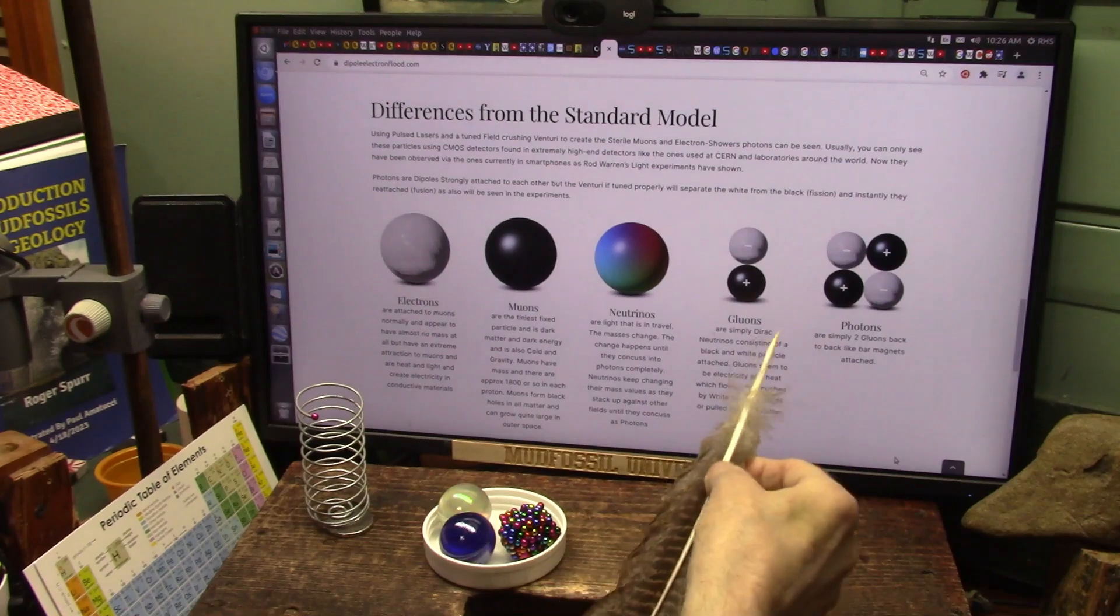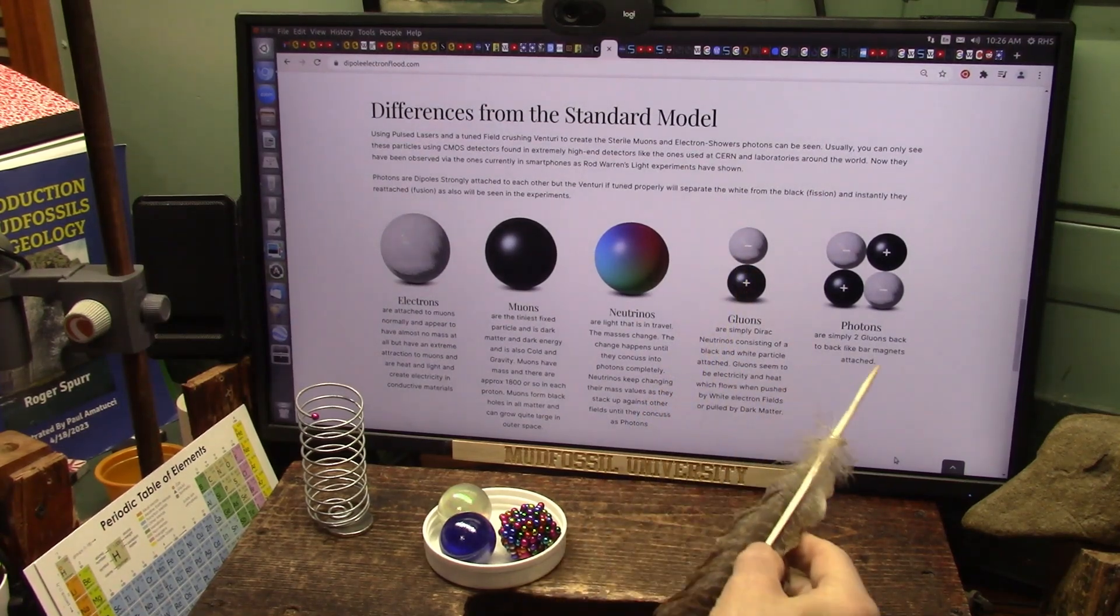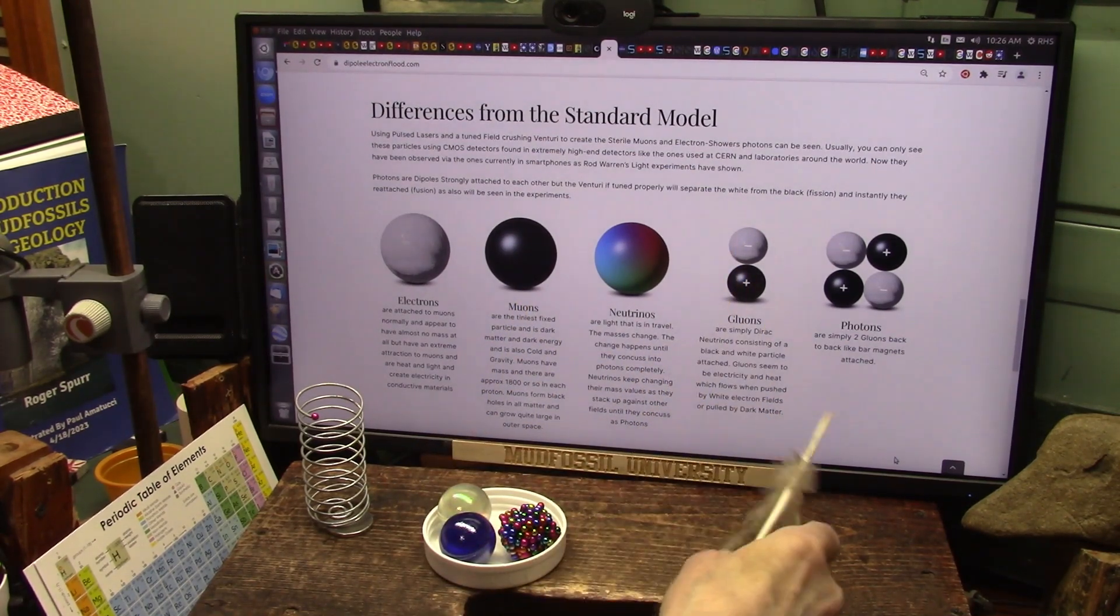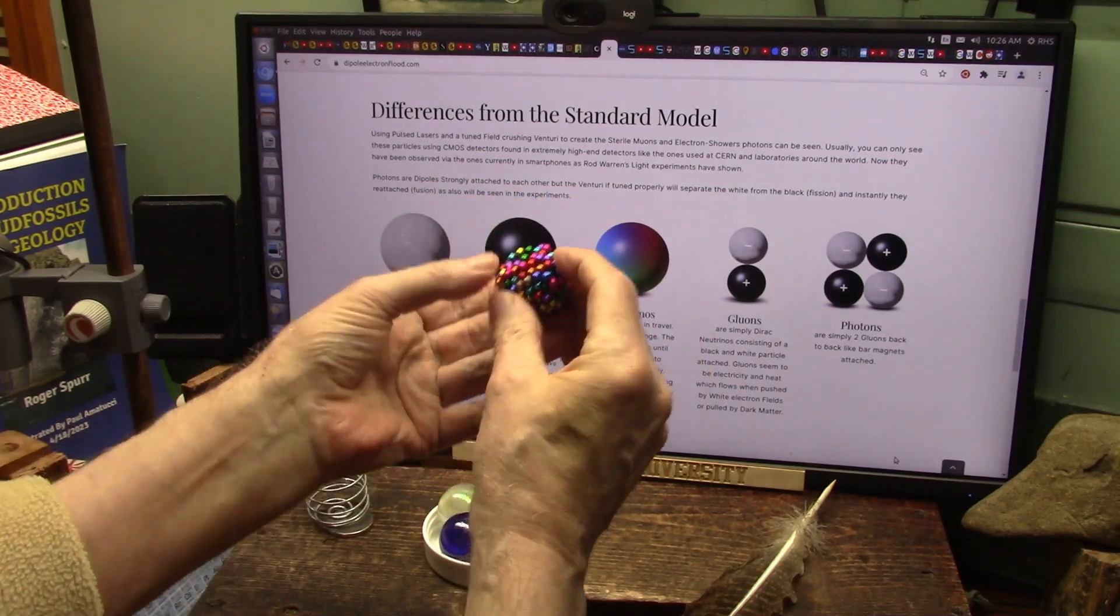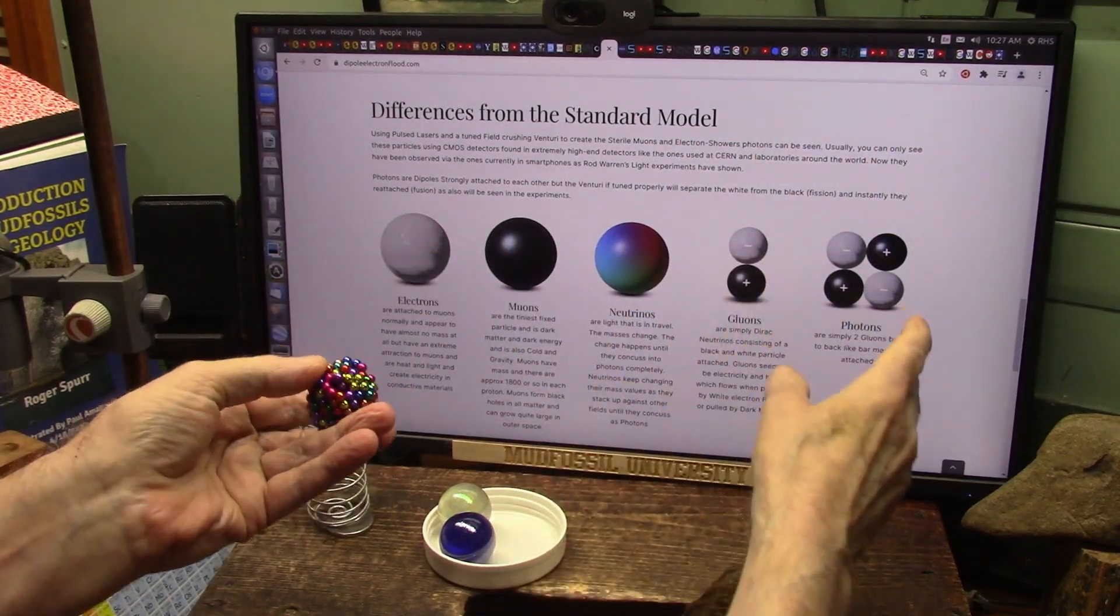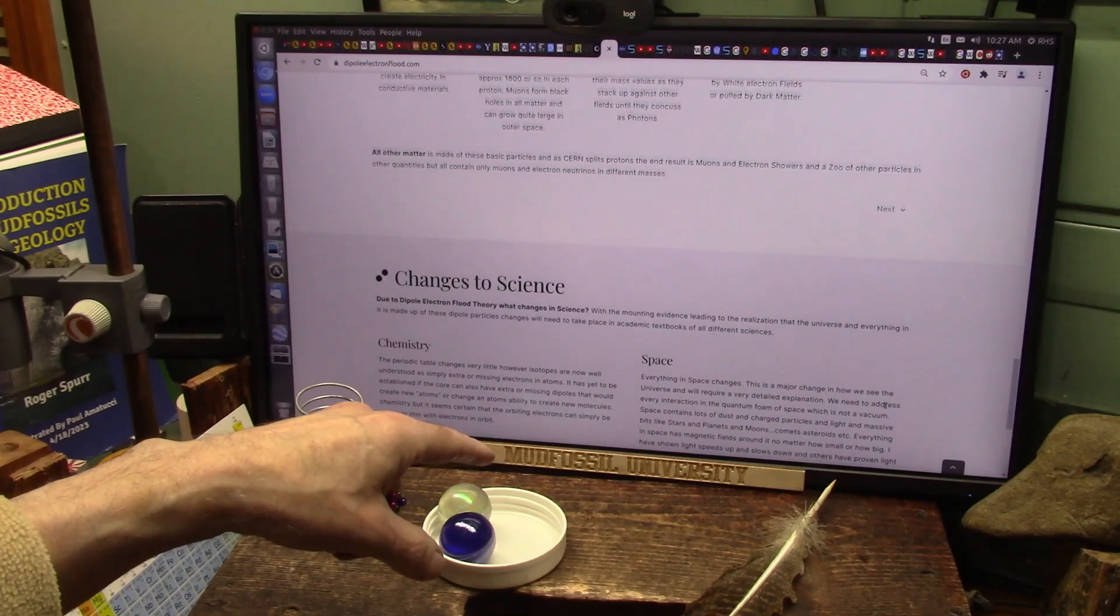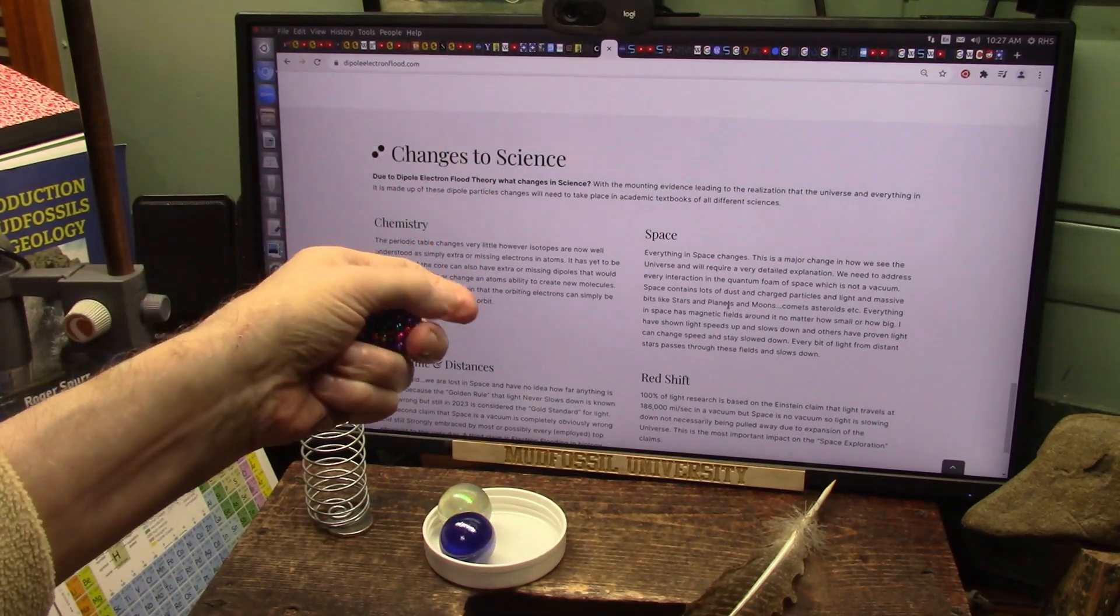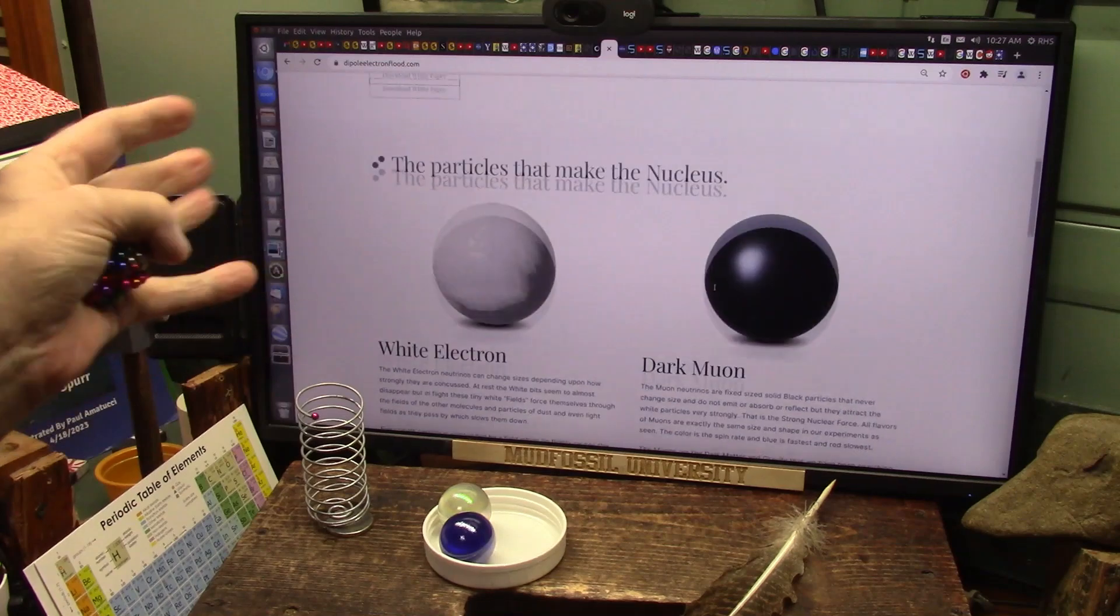They're getting closer and closer. Something just came in about gluons. Now this is my model, which is electron flood theory, dipoles. Gluons are the two smallest particles there are, which consists of an electron and a muon. That's what a gluon is. And 1823 of those makes a proton. 1824 makes a neutron because it's neutral. It doesn't want to give one up. It doesn't want to take one on. When they're uneven numbers, they're charged. Whether they want to accept one or give one up, that's up to them. Photons are just two of these back to back, as I showed you. Very, very simple. Everything I showed you is extremely simple and obvious and seen.